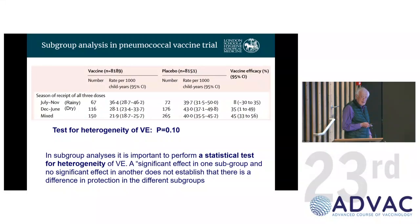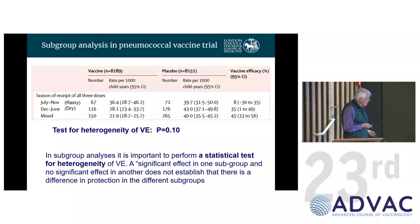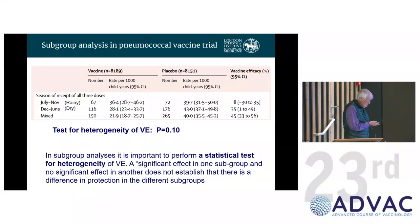Before you get too carried away with these analyses, just because it's significant in one group and not another doesn't mean there's necessarily a difference. The first thing to do is a heterogeneity test: if there really was no difference in vaccine efficacy between these three groups, how likely is it that we might see a result as extreme as the one observed? When you do this heterogeneity test — a fairly simple test — you get a p-value of about 10%. So it's not unlikely to have occurred by chance. Doing that heterogeneity test is important before going overboard in interpreting these results.